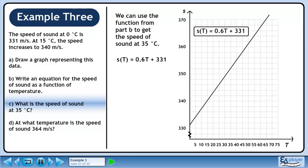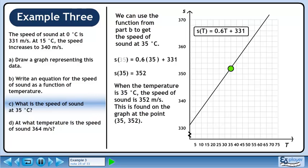Let's rewrite the function. We want to find the speed of sound at 35 degrees Celsius. Plug in 35 for temperature. Evaluate the right side to get 352. When the temperature is 35 degrees Celsius, the speed of sound is 352 meters per second. This is found on the graph at the point (35, 352).